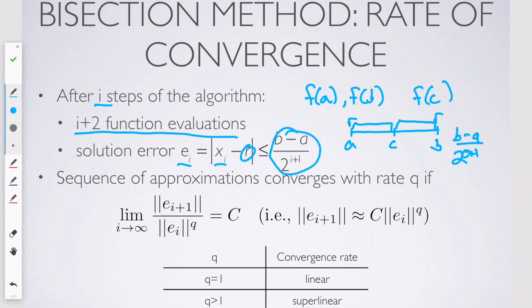And what convergence looks at is it looks at the i plus first error, or error bound, and divides by the ith error bound raised to some power q in the limit as i goes to infinity. And if that equals c, or I should say c is a non-zero constant.